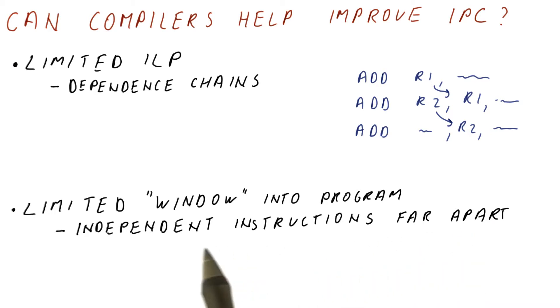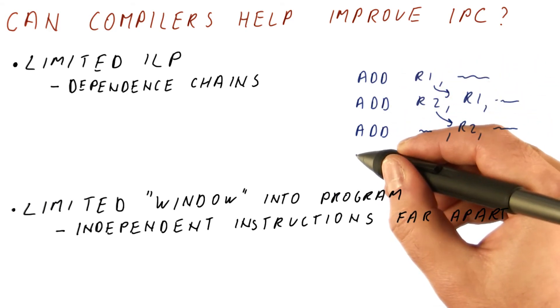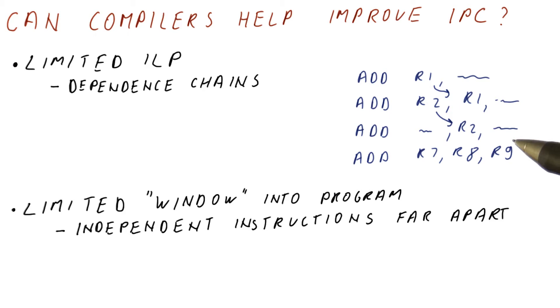Because, for example, it runs out of ROP space before it reaches those instructions that are independent. So in the same example, if we have a long chain like this, followed by, this instruction doesn't depend on any of those in the chain. But if the chain is too long, we run out of ROP space before we reach this instruction. So as far as this processor is concerned, this instruction cannot execute in parallel with those, just because we never see it.